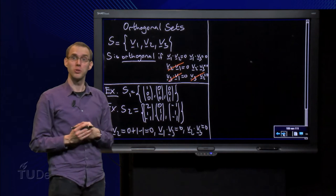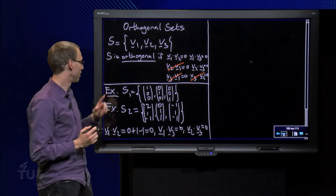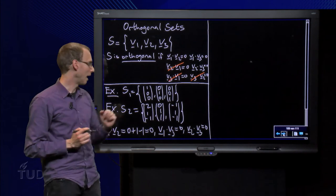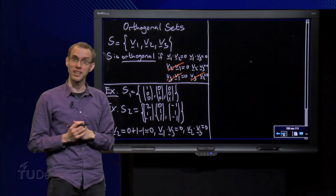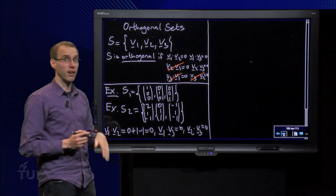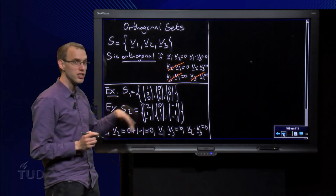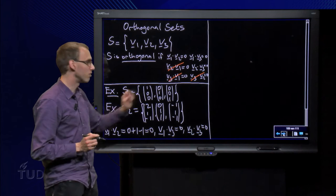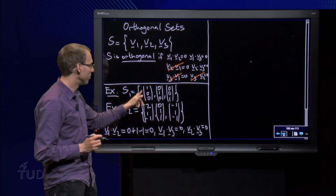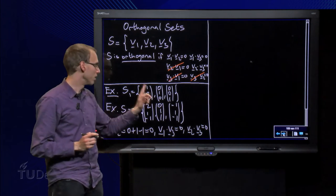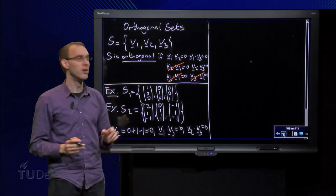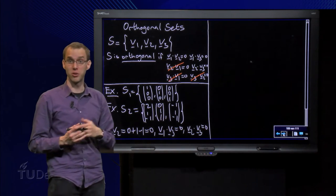So let us stick to two sets of three vectors. First, we take a look at S1, and then add S2 as the second example. Well, for S1 it is very easy to see that the set is orthogonal, because you can see straight away what the inner products are: between 1 and 2, 0; between 1 and 3, 0; and 2 and 3, 0. They are all 0, so you see immediately that S1 is an orthogonal set.